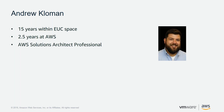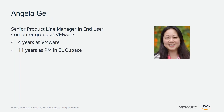I'm also joined by Angela G. My name is Angela G., and I'm a senior product line manager in the end user computing business unit at VMware. One of my main responsibilities is our Horizon 7 on VMware Cloud on AWS solution. I've been at VMware for four years, but I've had about 11 years of experience as a PM in the EUC space.